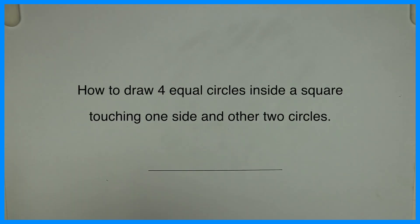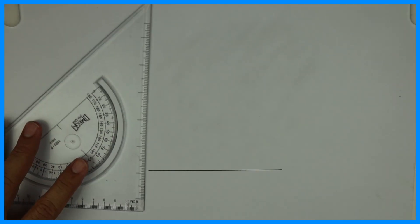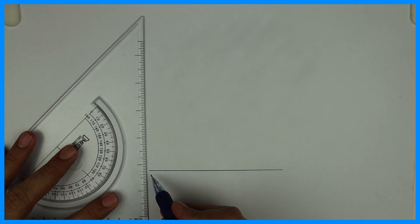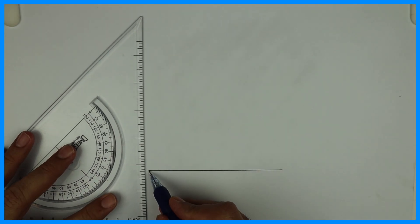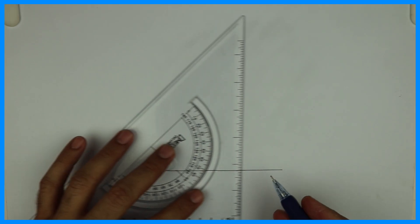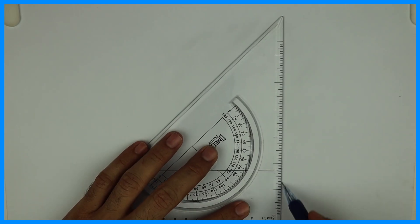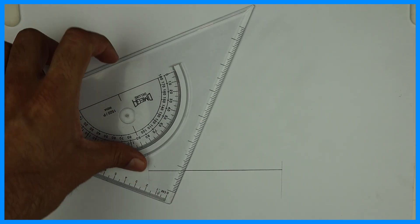Welcome to technical drawing. Today we're going to draw four equal circles inside a square, touching one side and two other circles. First, we will draw line AB which is 120 mm long. You can take whatever is the given dimension.